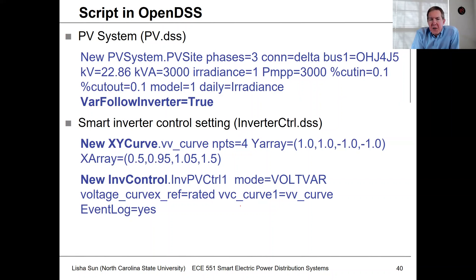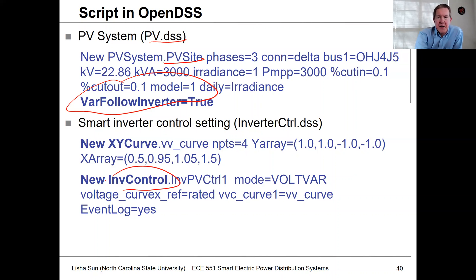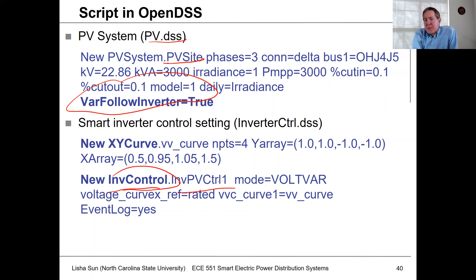To do this in OpenDSS, we need to augment the PV site definition to include smart inverter functionality. In PV.DSS, we add the flag 'var_follow_inverter = true'. Then we need to define a controller — the object type is 'InverterController', and we define an instance called 'InverterPVControl1'. The mode will be volt-var mode.